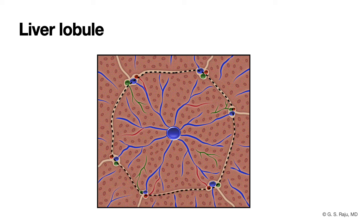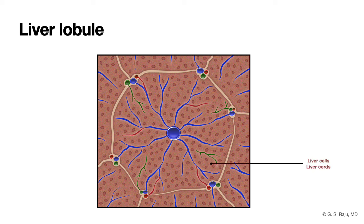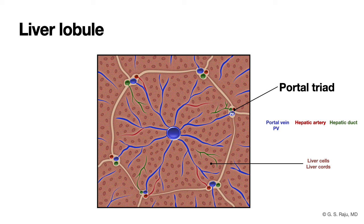This is the liver lobule. It consists of liver cells or hepatocytes, arranged as linear cords or liver cords. In the periphery, the liver lobule has portal triads consisting of portal vein, hepatic artery, and hepatic duct branches. The portal vein drains blood from the portal venous system and branches out to form capillaries. The liver capillaries are known as sinusoids.